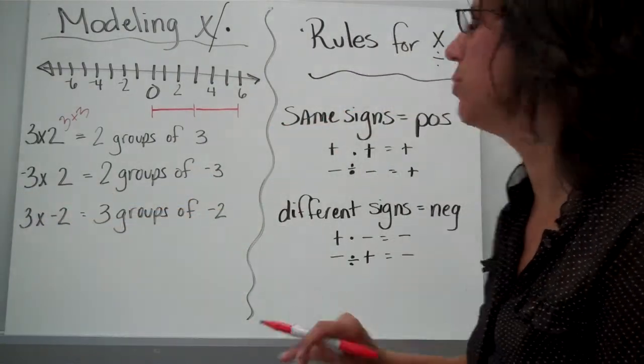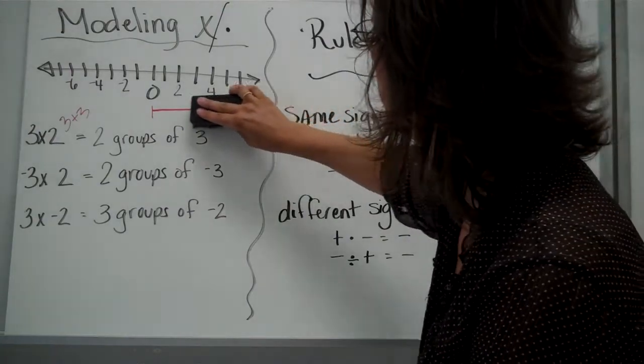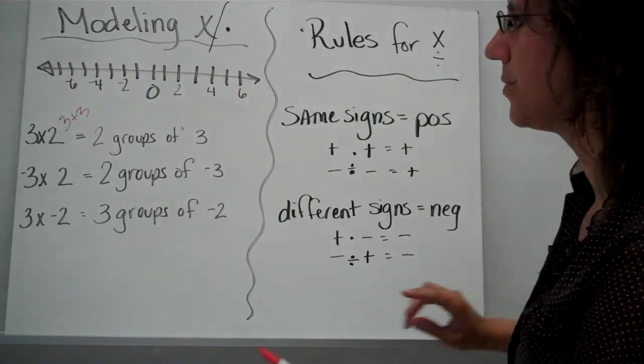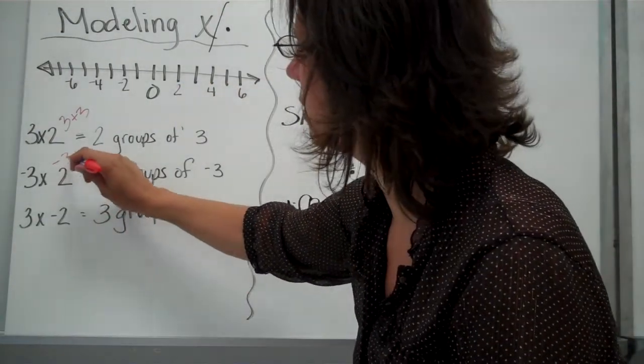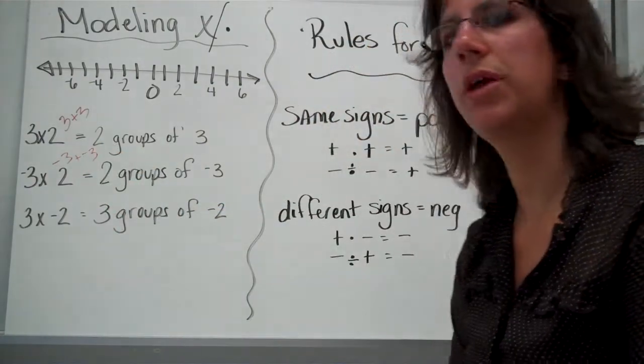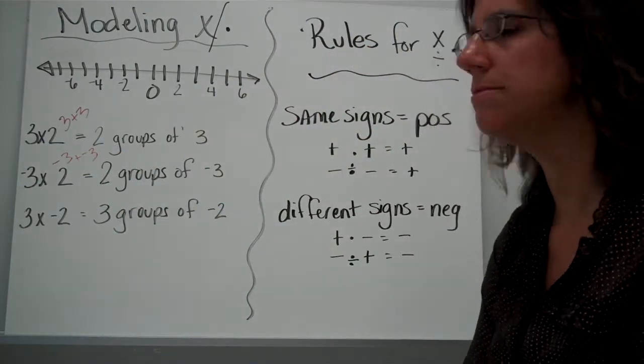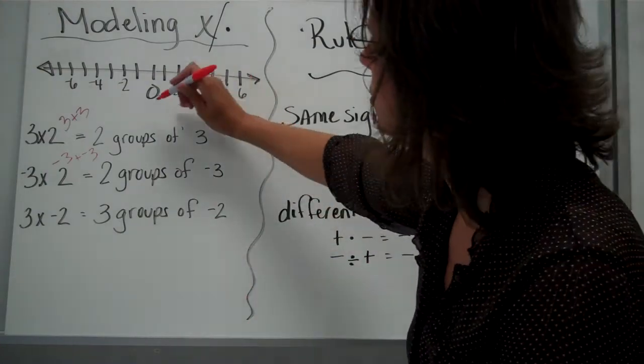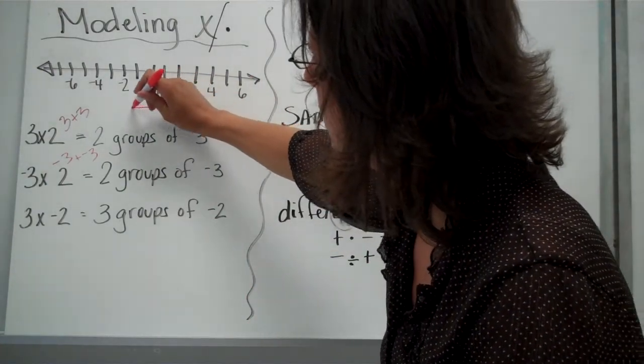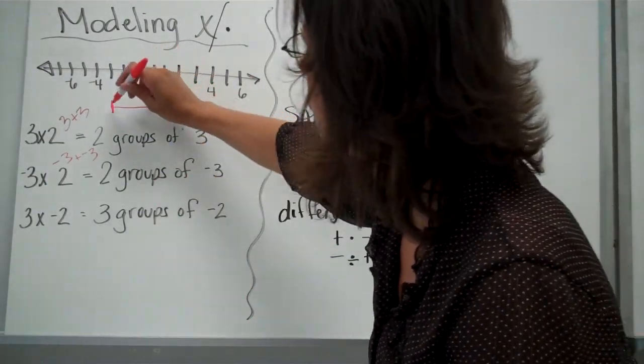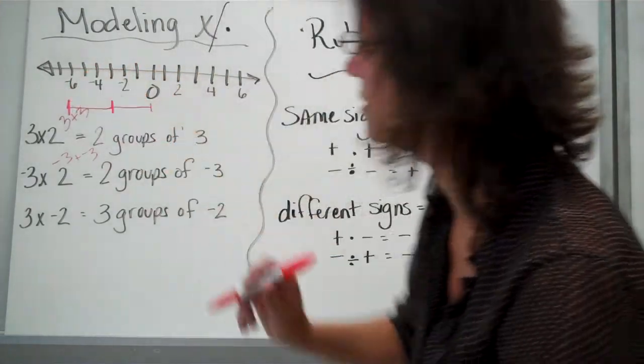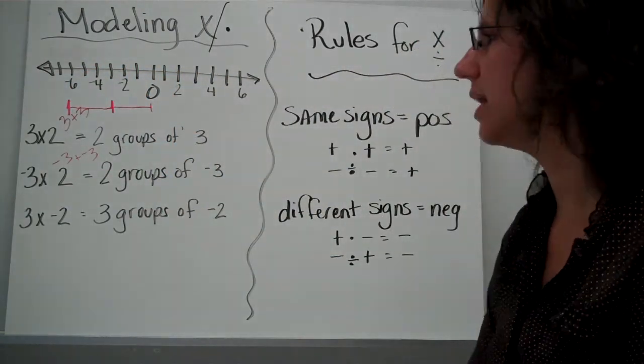Here, negative 3 times 2. What would that look like? That would be a negative 3 plus another negative 3 if we changed it into repeated addition. So how would you put that on your number line? You'd start at 0 and move to negative 3, and then move another negative 3 spaces. So where would you land? At negative 6.